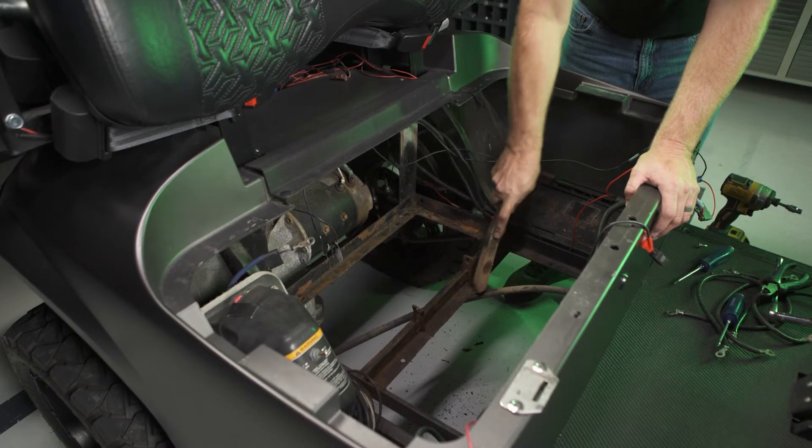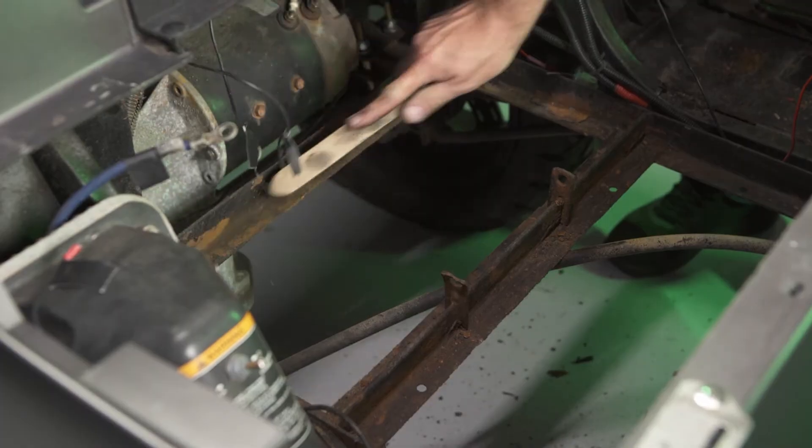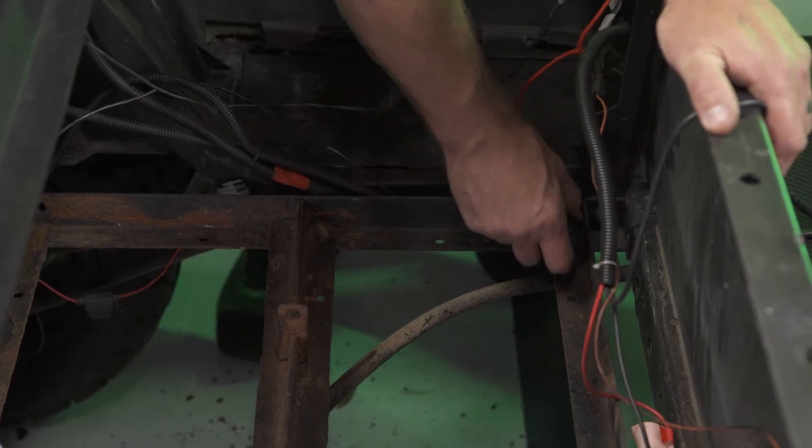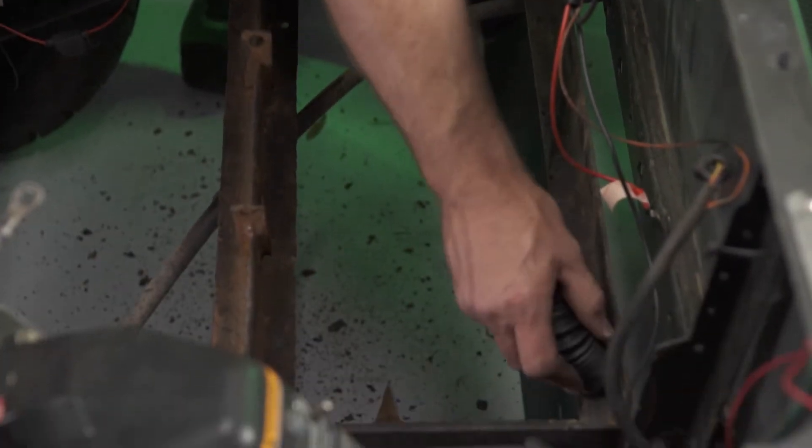If your battery compartment is dirty, take the opportunity to clean the area. Determine which corner of the battery tray you would like to install the battery in.